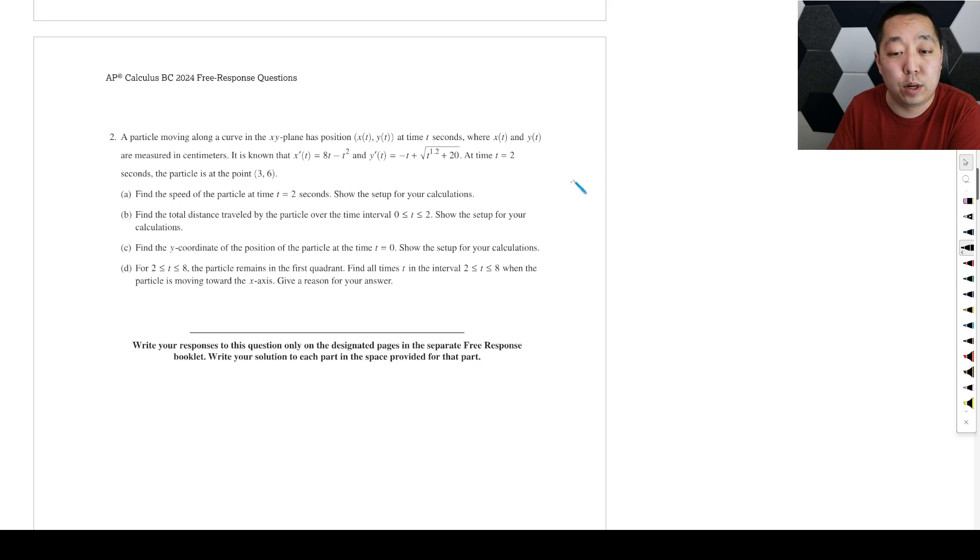Find the speed of the particle. Speed of the particle is going to be the square root of dx/dt squared plus dy/dt squared, the magnitude of the velocity. And we're going to evaluate that at t equals 2.